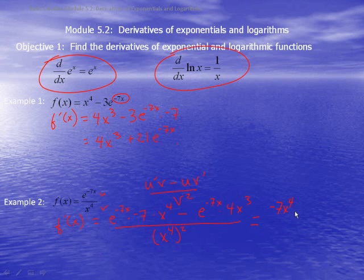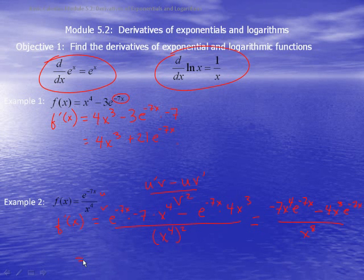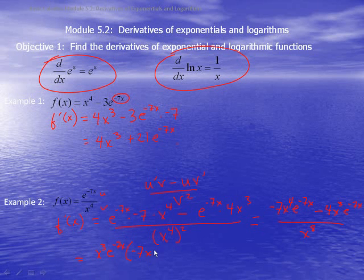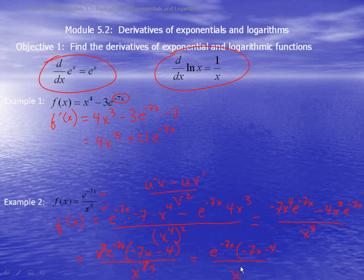Simplifying: negative 7x to the 4th times e to the negative 7x, minus 4x cubed times e to the negative 7x, over x to the 8th. We can factor out x cubed times e to the negative 7x, leaving negative 7x minus 4, all over x to the 8th. Canceling x cubed gives x to the 5th in the denominator. So our final answer is e to the negative 7x times negative 7x minus 4, over x to the 5th.